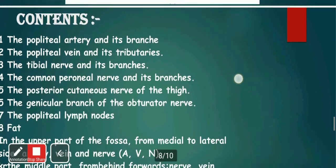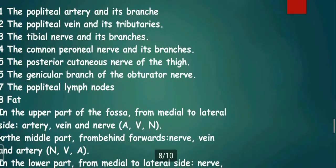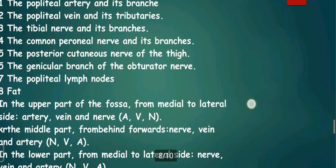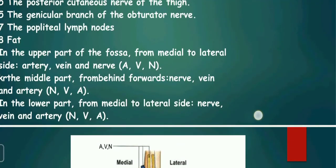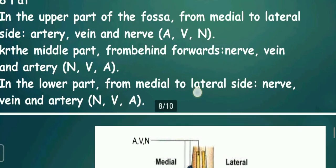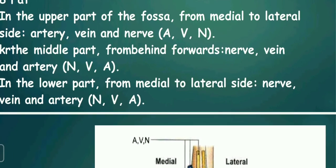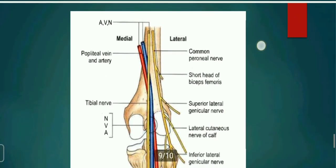The contents of the popliteal fossa are: popliteal artery and its branches, popliteal vein and its tributaries, tibial nerve and its branches, common peroneal nerve and its branches, posterior cutaneous nerve of the thigh, genicular branch of the obturator nerve, popliteal lymph nodes, and fat. In the upper part of the fossa, going from medial to lateral, the arrangement is artery, vein, nerve (AVN). In the middle part it becomes nerve, vein, artery (NVA), which continues to the lower part.